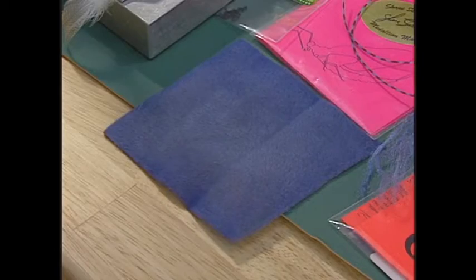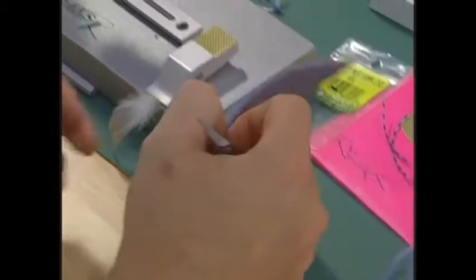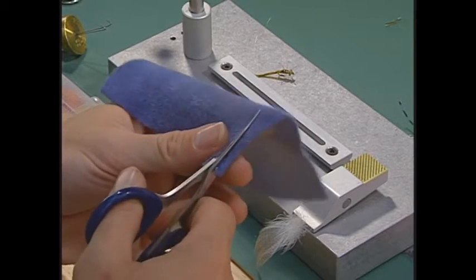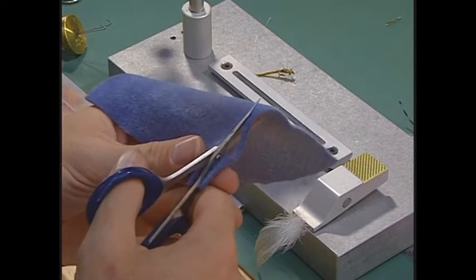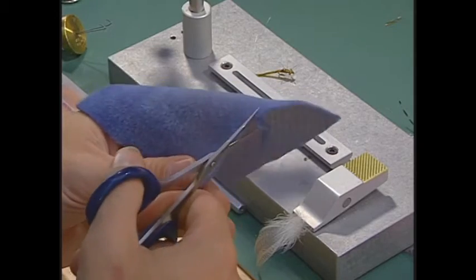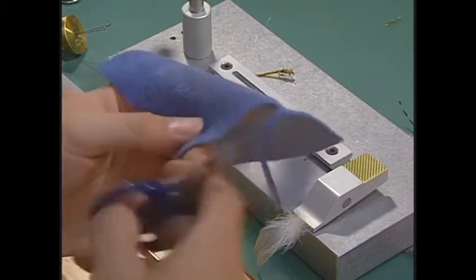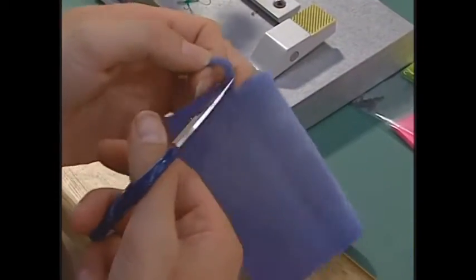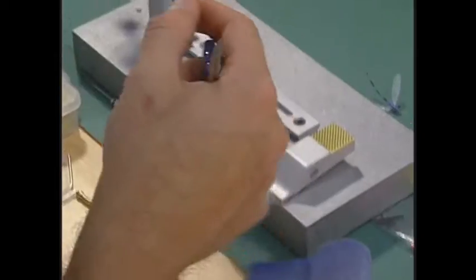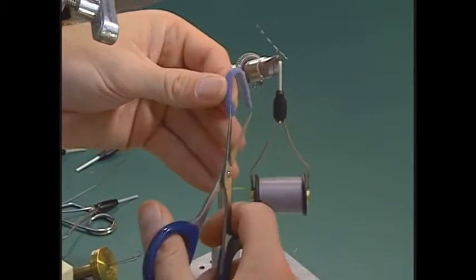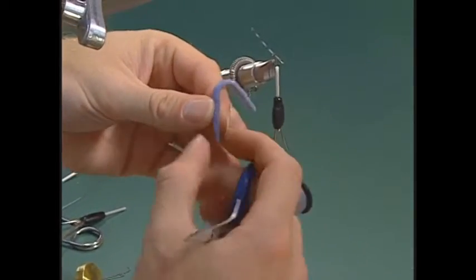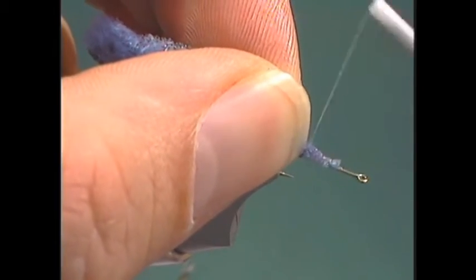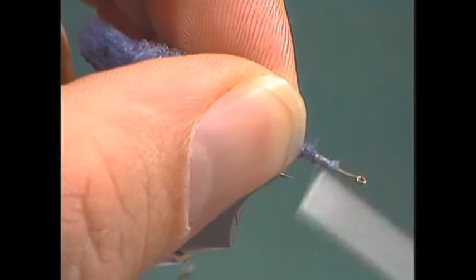Next we're going to grab some furry foam. We're going to cut a fairly narrow strip. This is what we'll be using instead of dubbing for our thorax. Cut it off. Now when I hold it up here, I'll cut it at an angle before I tie it in. Tie that in and come forward.